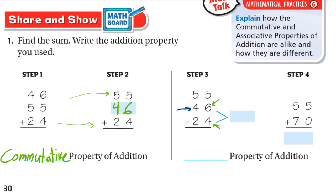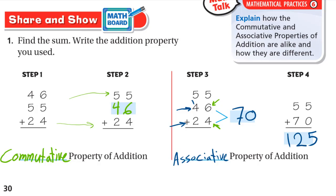Add 46 plus 24 first: 6 plus 4 is 10, write 0 carry 1; 4 plus 2 is 6, plus 1 is 7 — so 46 plus 24 is 70. Choosing to add different numbers (46 and 24 instead of 55 and 46) means we're using the associative property. Now add 55 plus 70: 5 plus 0 is 5, and 7 plus 5 is 12. The answer is 125.